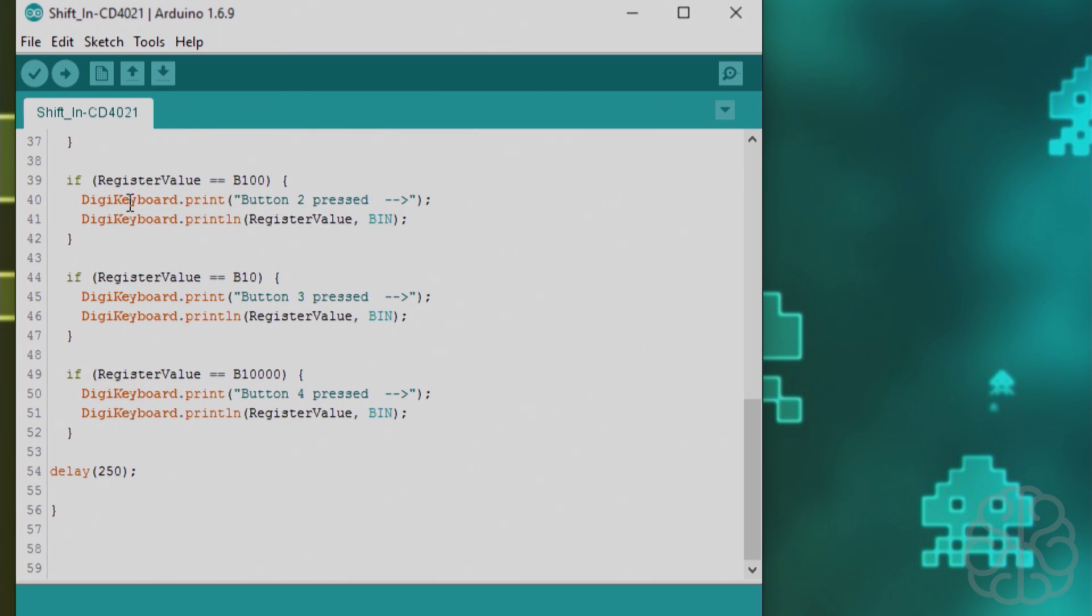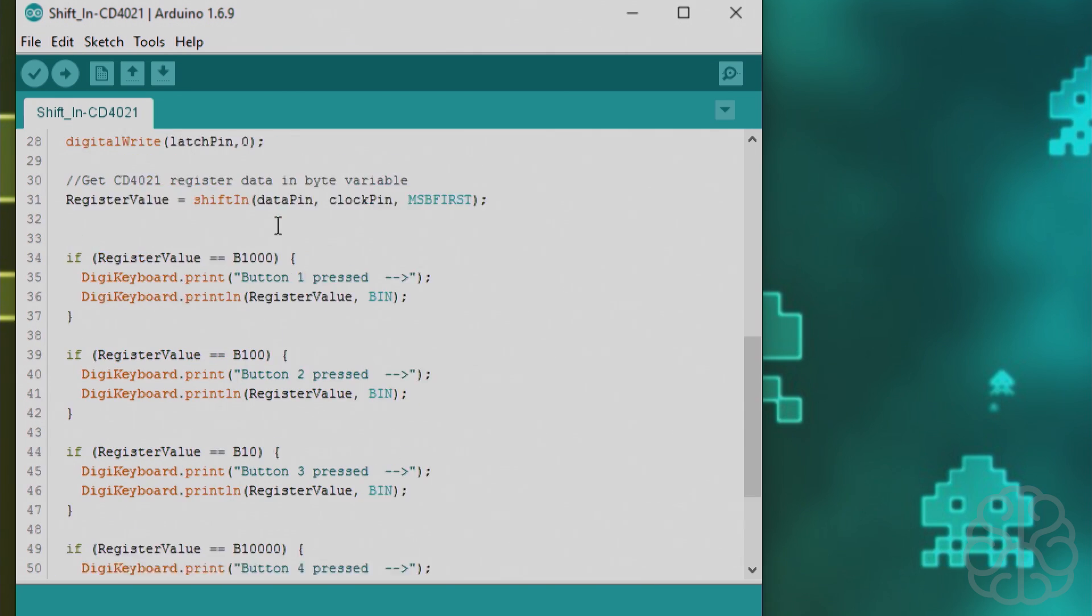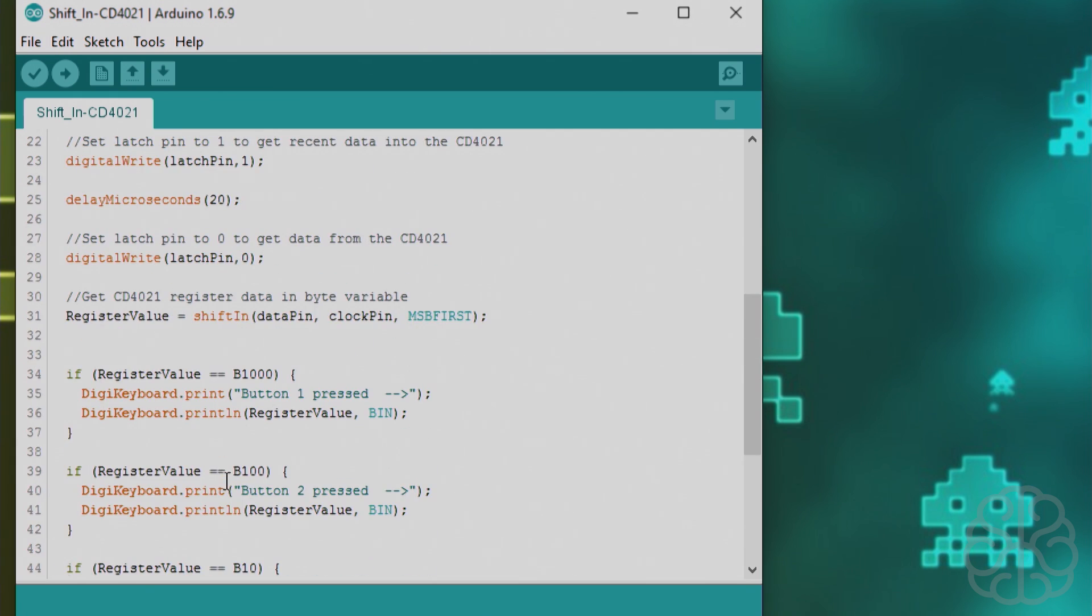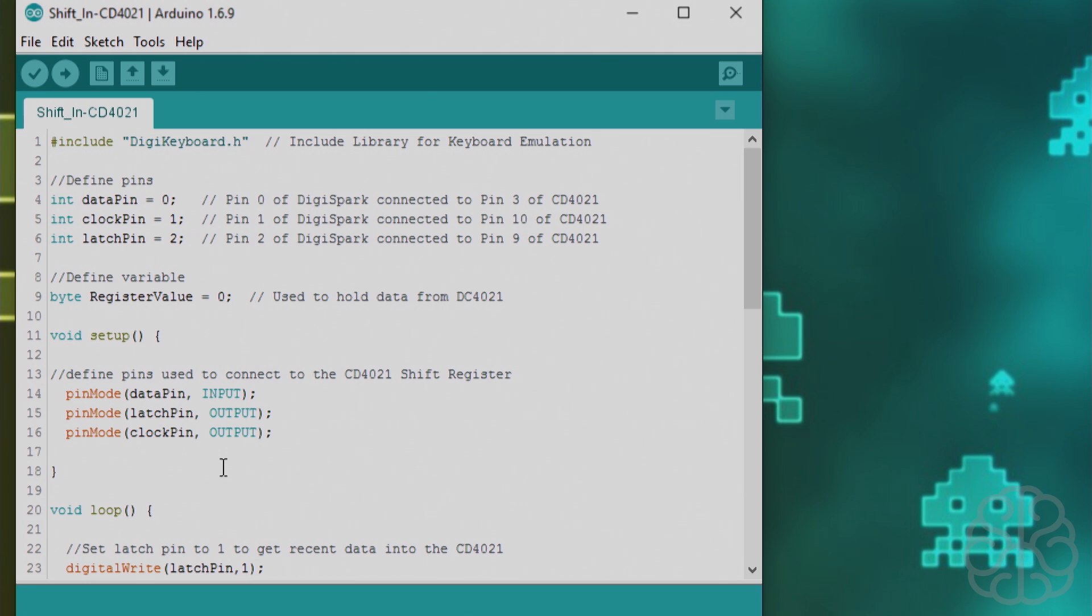If you're wondering where I got these values, basically what I did is I printed out every time I pressed the button and saw what the value was by using this line: DigiKeyboard.print registerValue comma bin. Then I did my if statement depending on that. There's a delay of 250 at the end, and that's it. It loops back and waits for another button to be pressed. We're gonna upload that to the DigiSpark and see what happens.